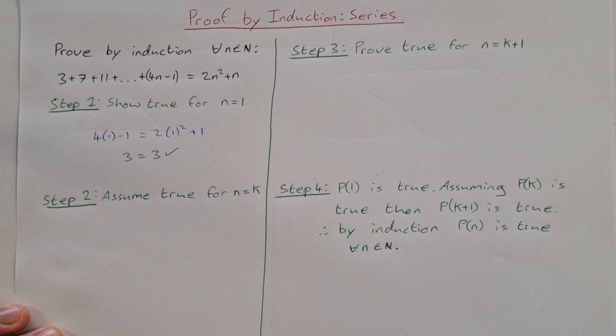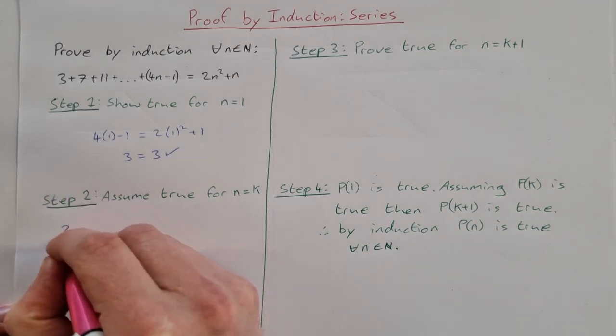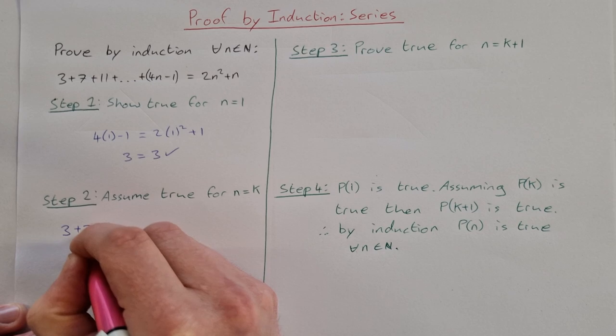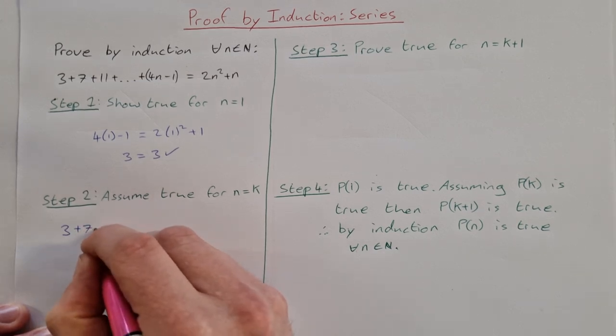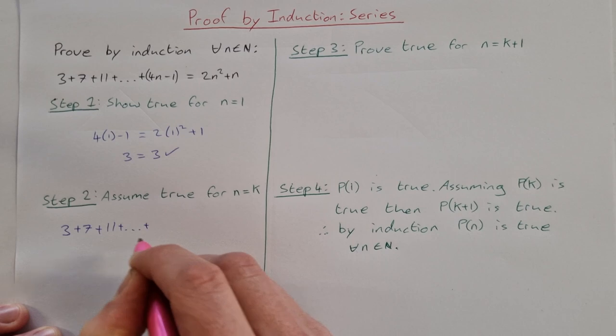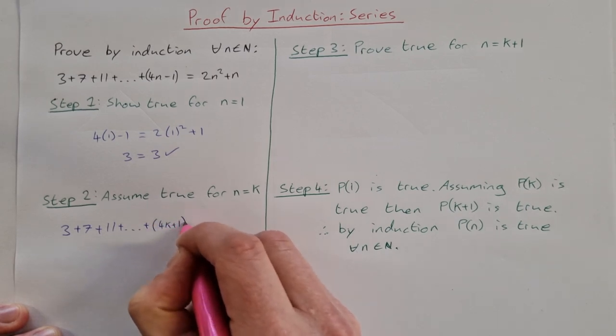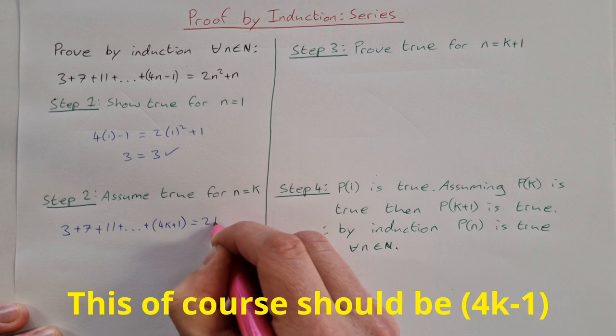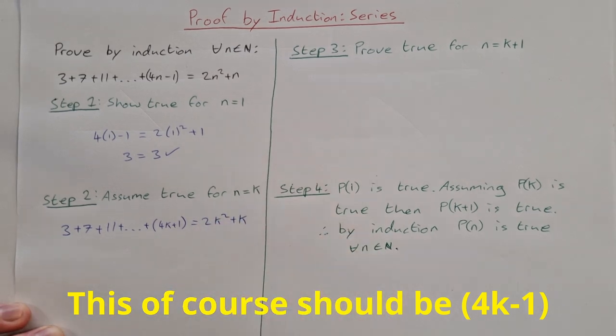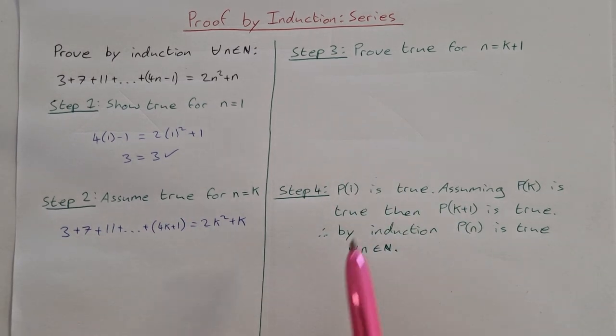Step 2 is we assume true for n equal to k. So for this you just write out your series and put in k instead of n. So when we get to this stage here we'll have 4k minus 1 equals 2k squared plus k. That's all you need to do in step 2. We're going to use this in step 3 in a moment.